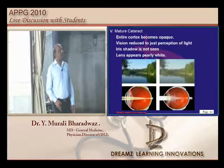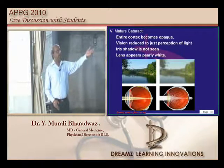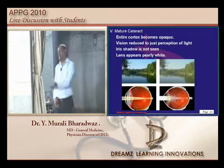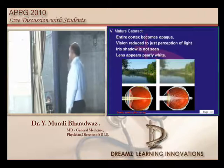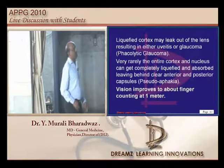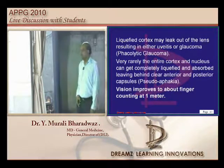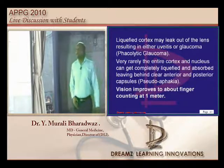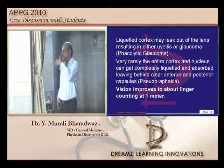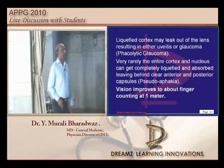Looking at the stages of cataract: lamellar separation, incipient cataract, immature cataract, intumescent cataract, mature cataract, and hypermature cataract. In mature cataract the anterior chamber is normal, the lens is pearly white, there is no iris shadow. Absent light perception is not the finding — vision remains reduced to the finger-counting stage, which is important to underscore.